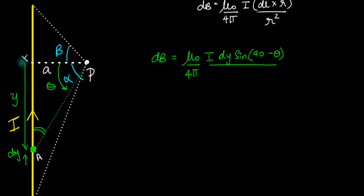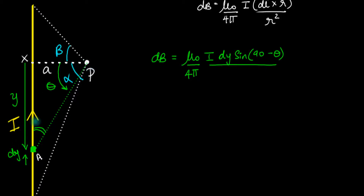Looking at triangle APX, AP squared equals AX squared plus XP squared by Pythagoras — that's just y squared plus a squared.